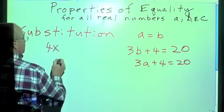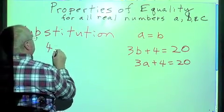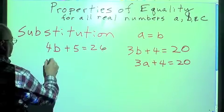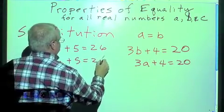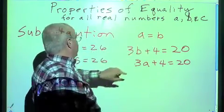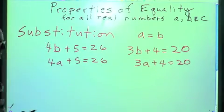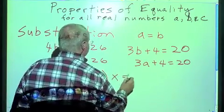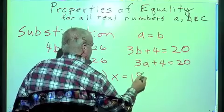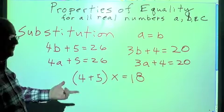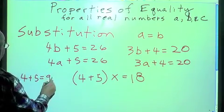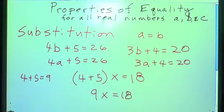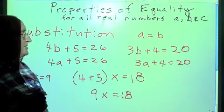We can also say 4B plus 5 equals 26, then 4A plus 5 equals 26. Substitution property means that if A equals B, then we can substitute A for B at any point in time. Now, one of the ways we use this in solving equations is really simple. I have an equation that says 4 plus 5 quantity times X equals 18. Well, a real simple addition says 4 plus 5 equals 9. Well, if 4 plus 5 equals 9, then I can replace the 4 plus 5 with 9X equals 18. So those are reflexive, symmetric, transitive, and substitution.